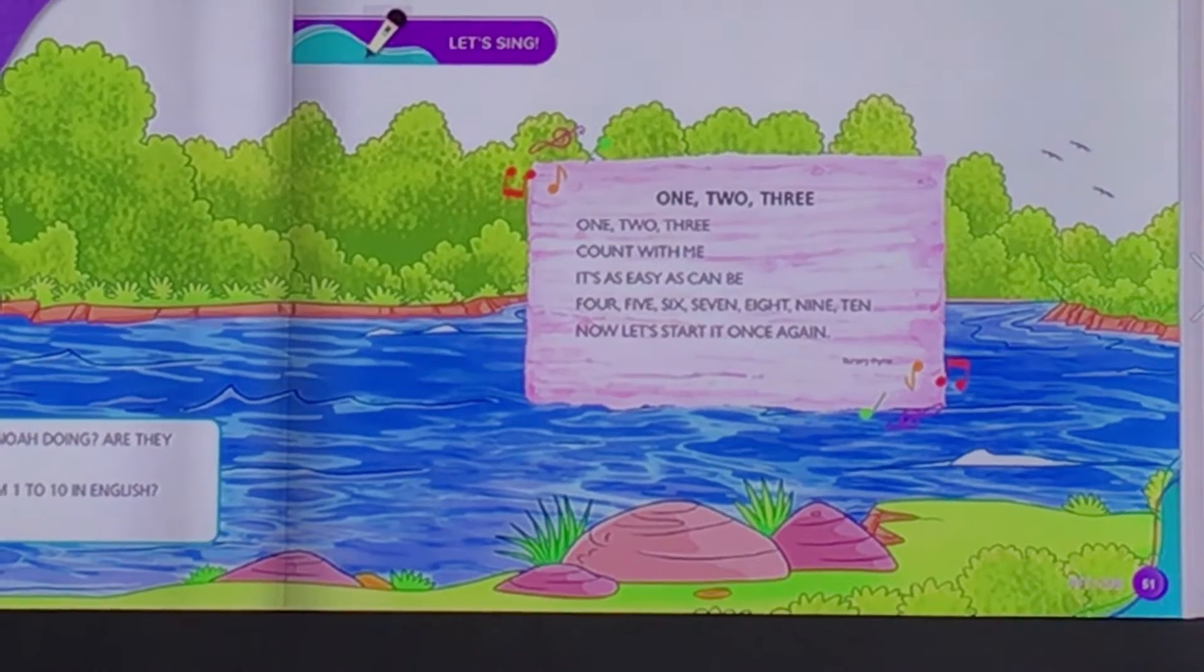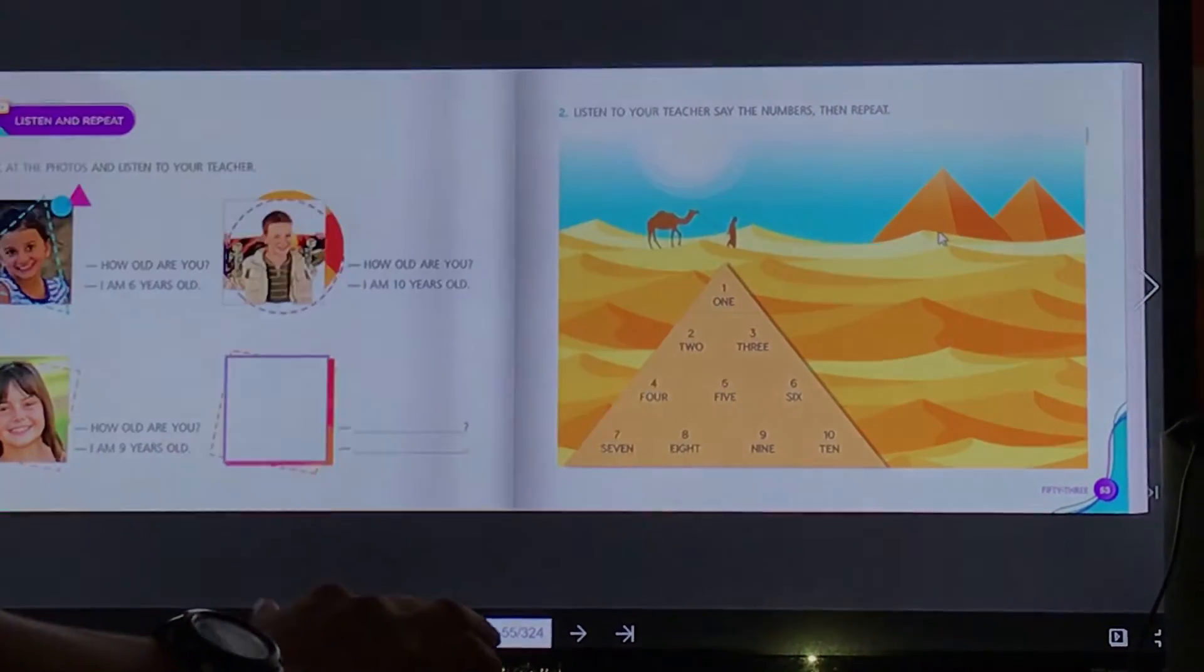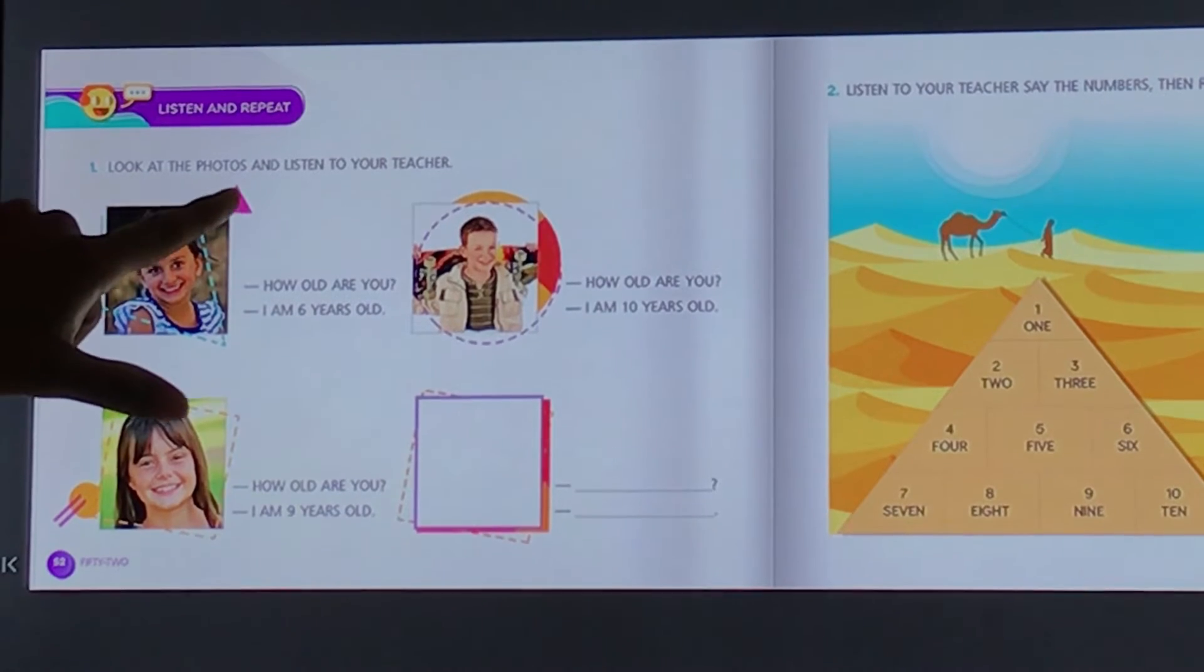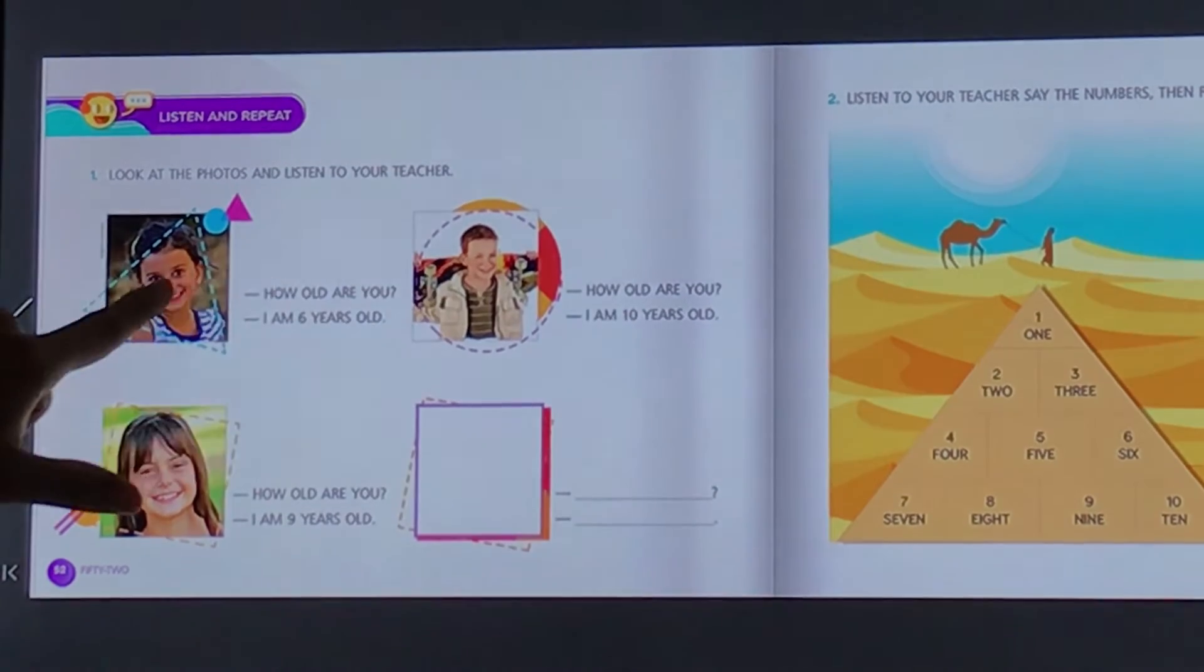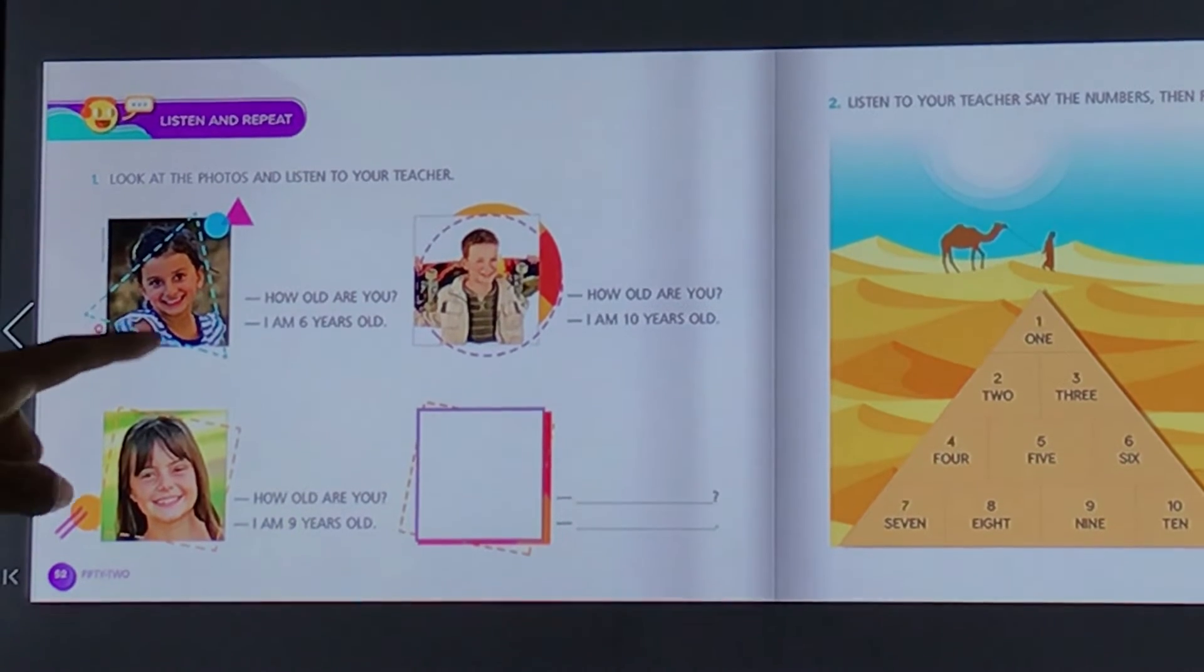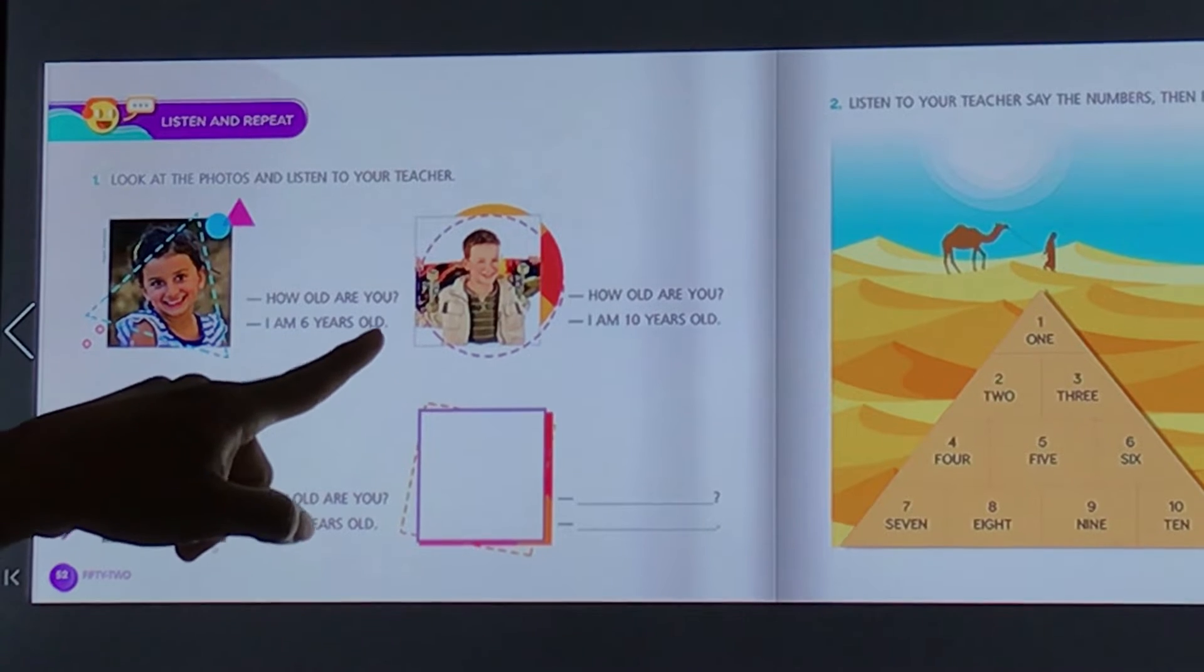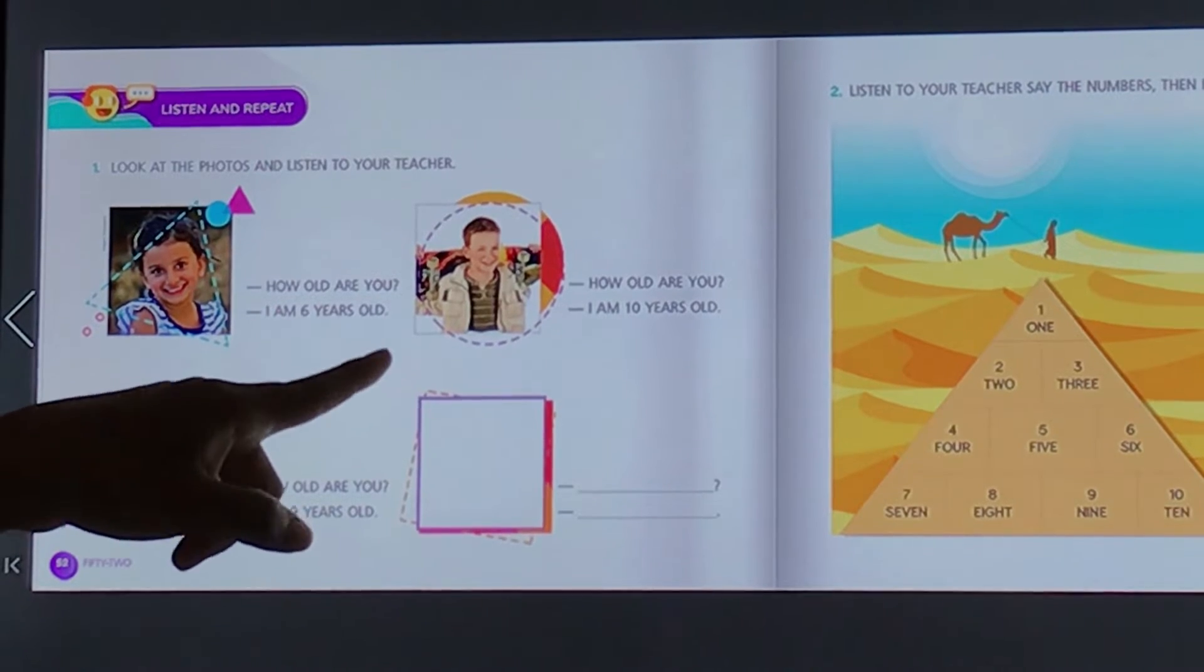Very good. Let's go to the next page. Vocês podem até pausar o vídeo e continuar cantando. Nós temos uma atividade, page 52. Listen and repeat. Look at the photos and listen to teacher. Vamos olhar para as fotinhas. Picture one, how old are you? Nós estamos perguntando para ela. Ela diz, I am 6 years old. Tenho 6 anos de idade.